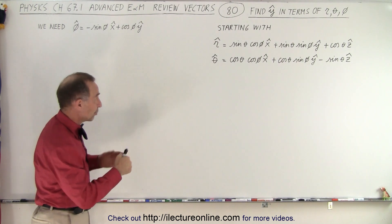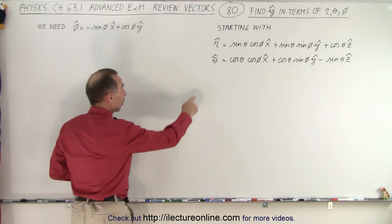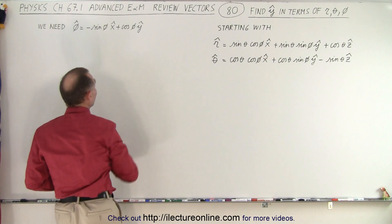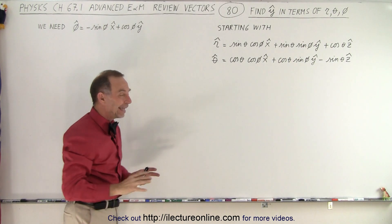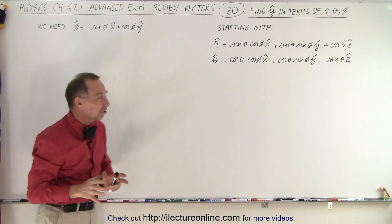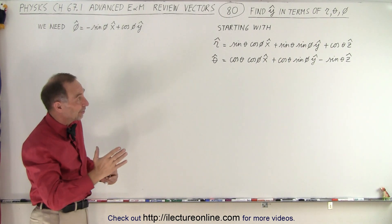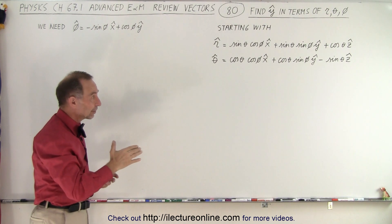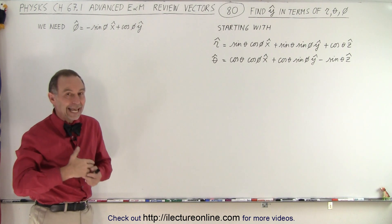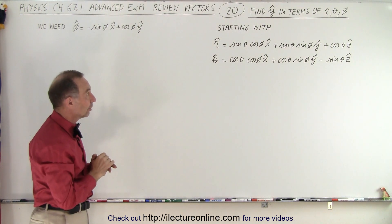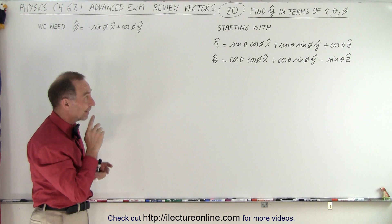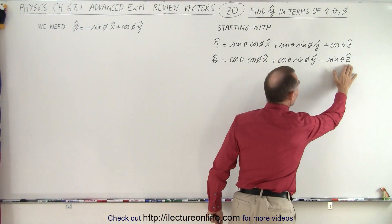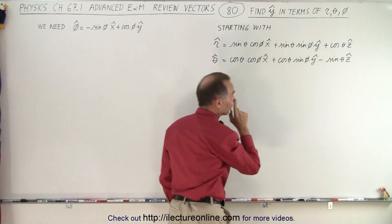We're going to start with the same three definitions: the r-unit vector, the theta-unit vector, and the phi-unit vector. The approach initially is the same, but at the end, instead of eliminating the y-unit vector, we have to eliminate the x-unit vector to isolate the y-unit vector. On our first step, we're going to eliminate the z-unit vector.